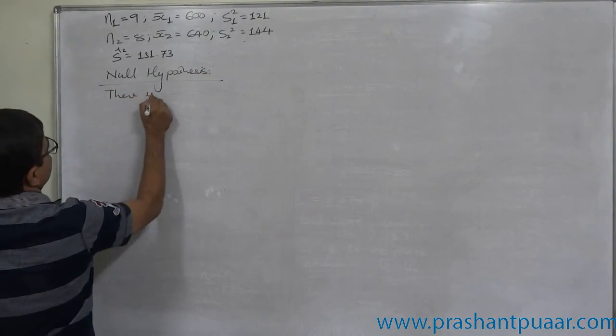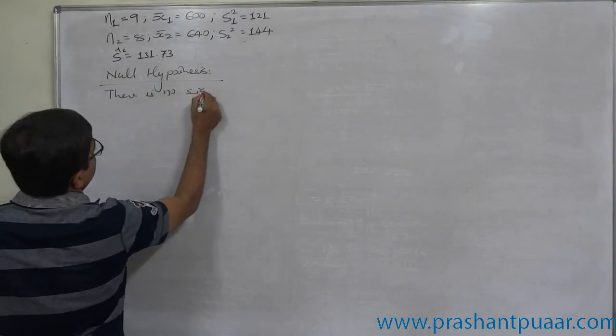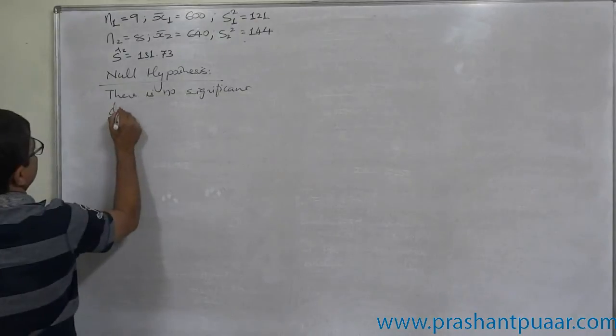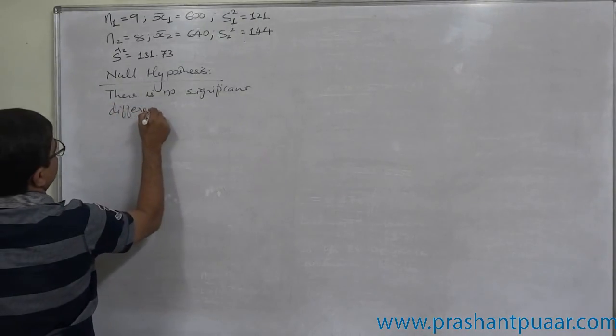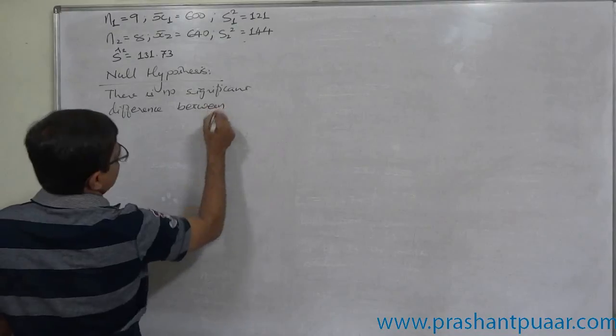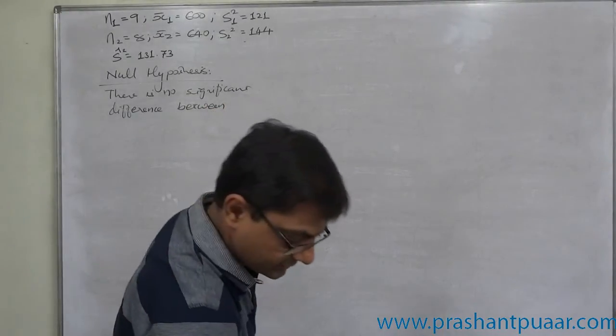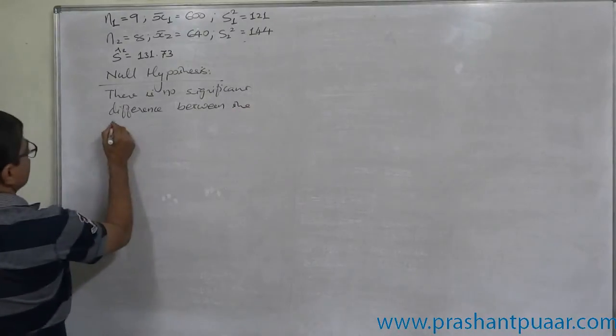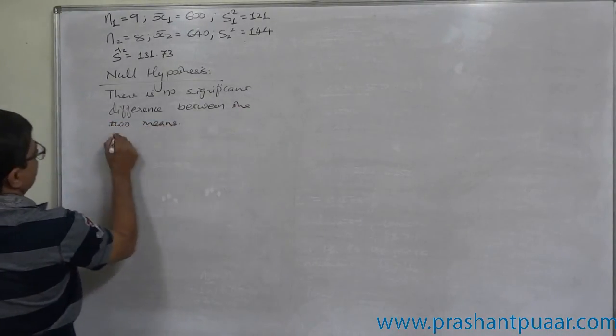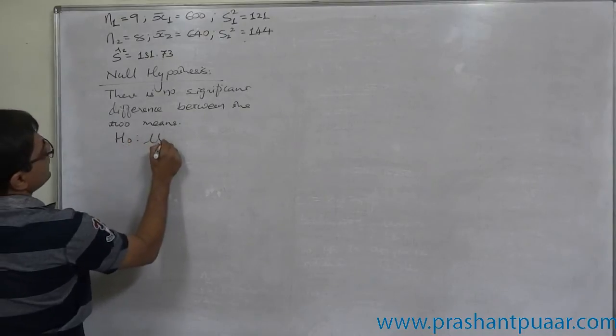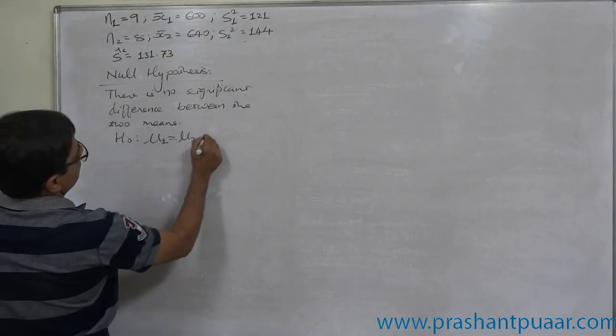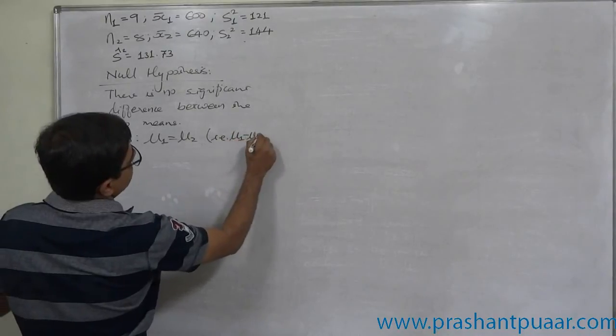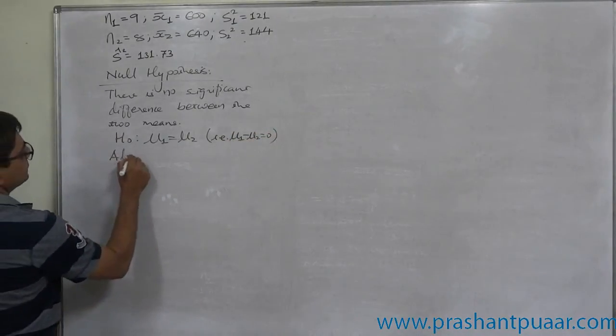Null hypothesis: There is no significant difference between the two means or the two averages. H₀: μ₁ = μ₂, or μ₁ - μ₂ = 0.